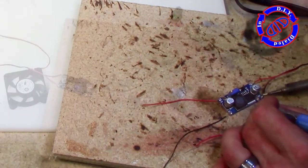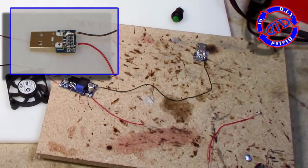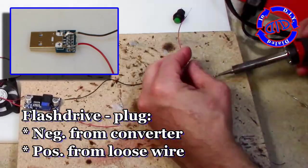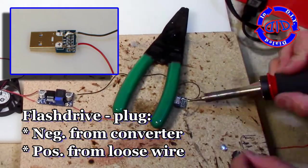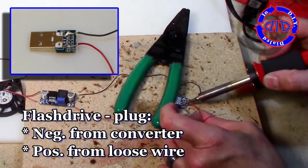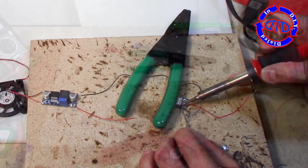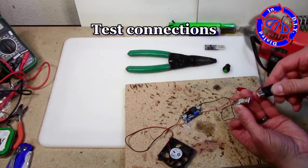I'm going to take that wire that I put on the negative in port of the converter and run that to the negative port on my USB flash drive. I'm also going to take a smaller section of loose wire and connect that to the positive pin on the USB flash drive.